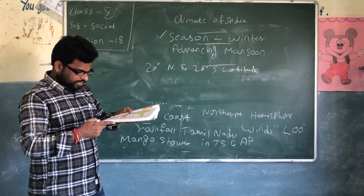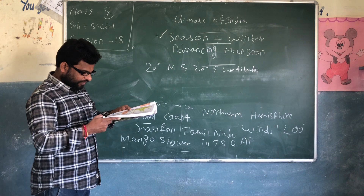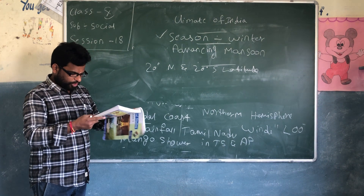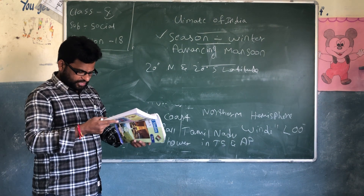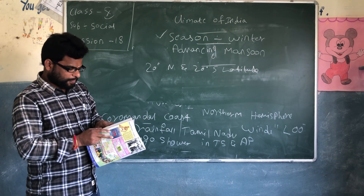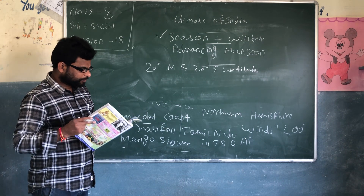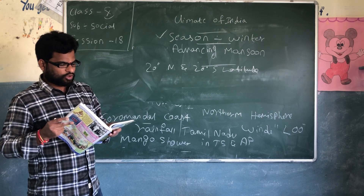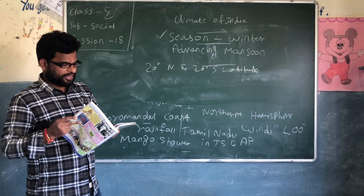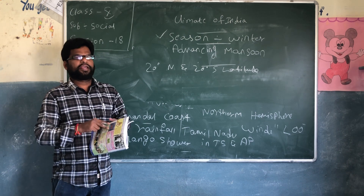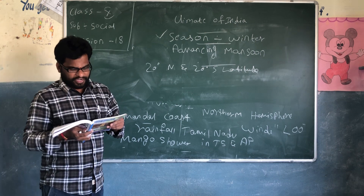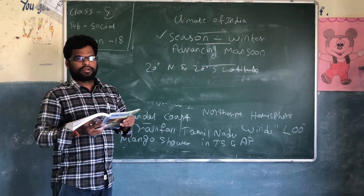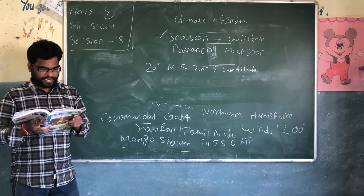After passing the equator, these winds deflect towards the low pressure formed in the Indian subcontinent. The heating of the land creates low pressure on the landmass of the Indian subcontinent, especially over central India and the Gangetic Plain.